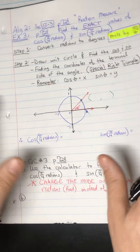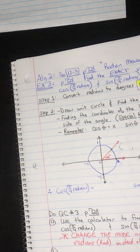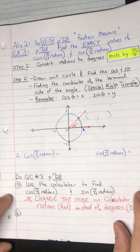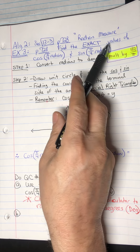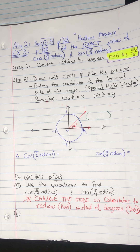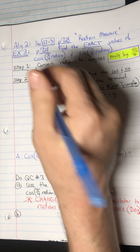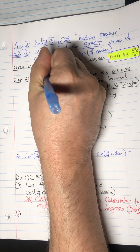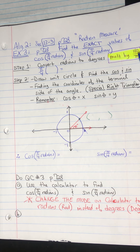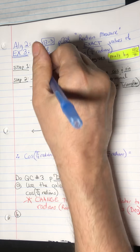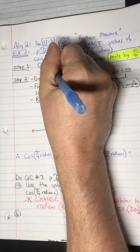Now example 3. Remember how we learned to find exact values of cosine and sine of degree measures? We're going to do the same thing using the unit circle, but this time using radian measures instead of degrees. Step one: convert radians to degrees. Pi over 4 radians — what does that equal in degrees? Since I'm converting radians to degrees, I multiply by 180 over pi.